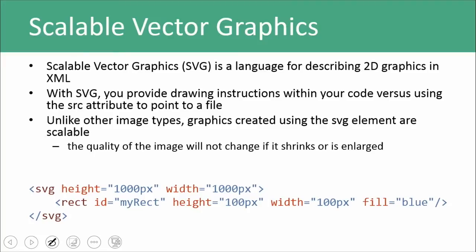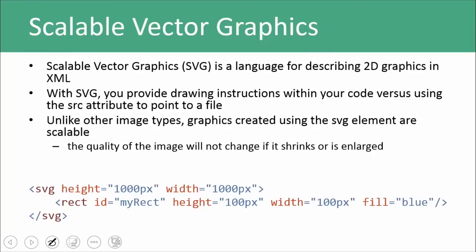I had troubles getting our browser to render the SVG graphic, so I'm not going to show you a demo. But this is the type of code you would want to use in order to draw a rectangle which is 100 pixels by 100 pixels. A geeky little programming note: notice that it's 100 by 100 — that's a square, but all squares are rectangles; not all rectangles are squares.